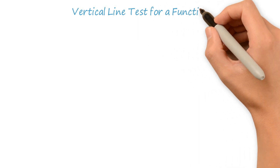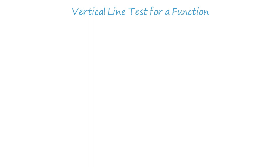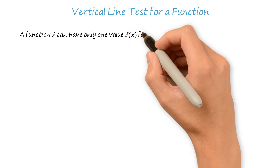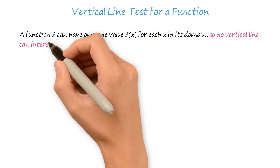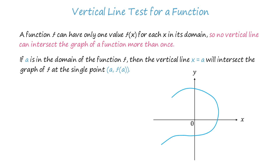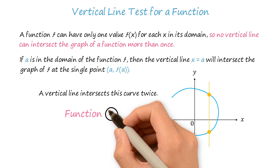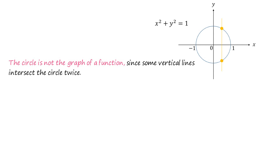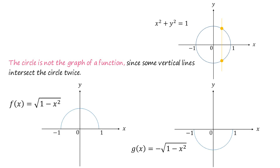Vertical line test for a function. Not every curve in the coordinate plane can be the graph of a function. Using this test we can figure out whether a given curve is the graph of a function or not. A function f can have only one value, f of x, for each x in its domain, so no vertical line can intersect the graph of a function more than once. If a is in the domain of the function f, then the vertical line x equals a will intersect the graph of f at the single point whose abscissa is a and ordinate is f of a. Consider the curve in the coordinate plane as shown. A vertical line intersects this curve twice, so this curve is not the graph of a function. Similarly, the circle is not the graph of a function, since some vertical lines intersect the circle twice. However, the upper semicircle and the lower semicircle both are the graphs of functions.